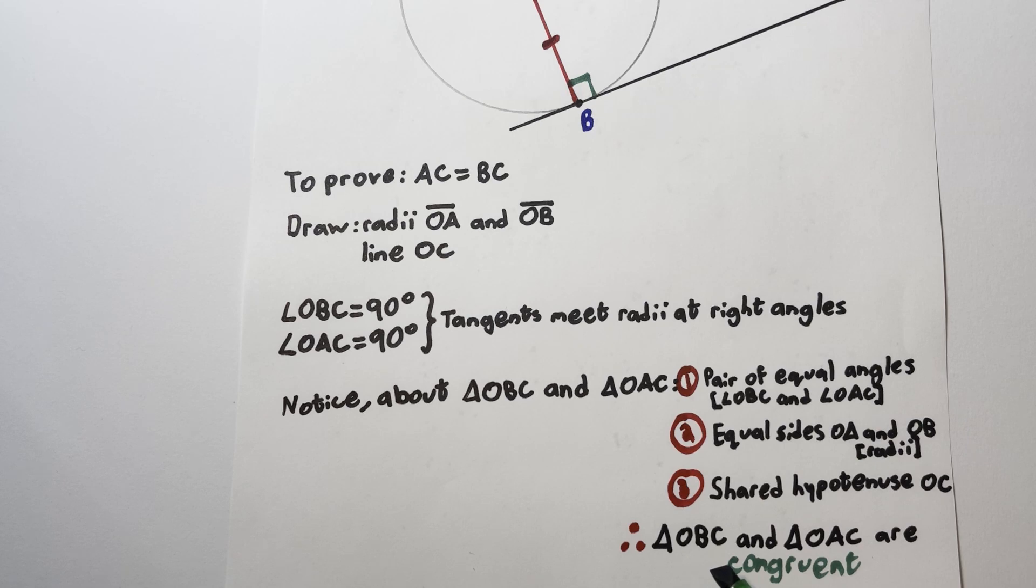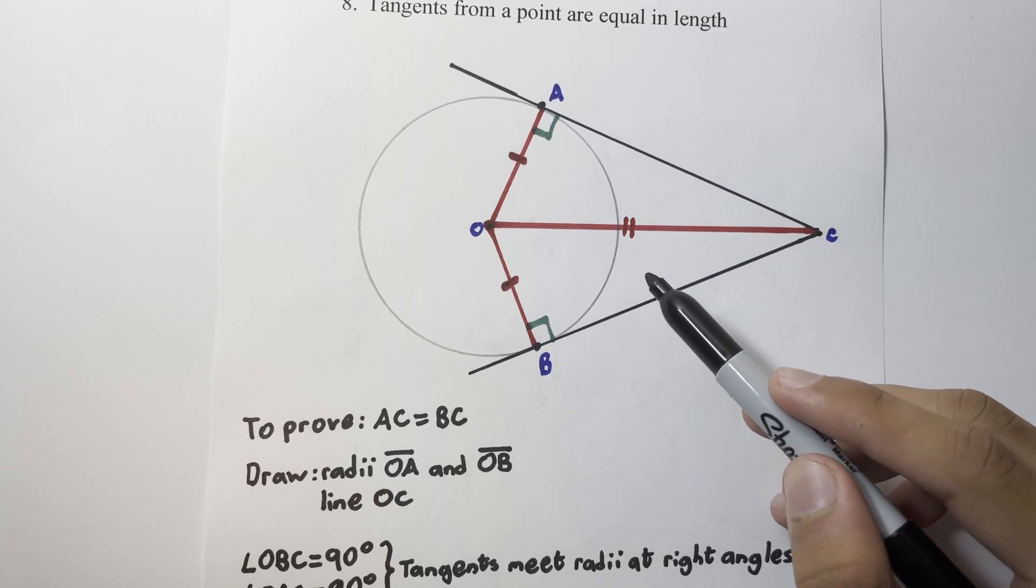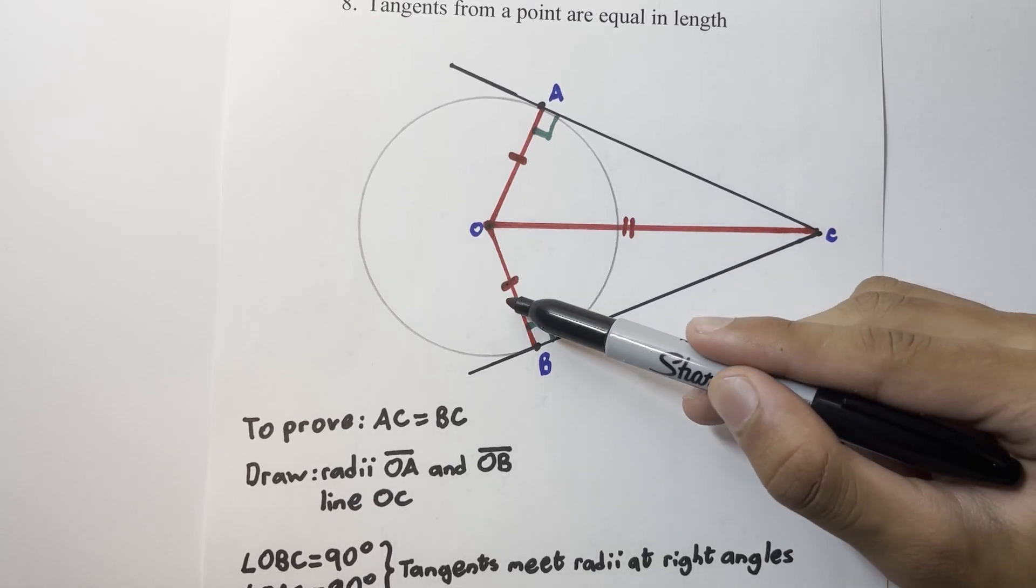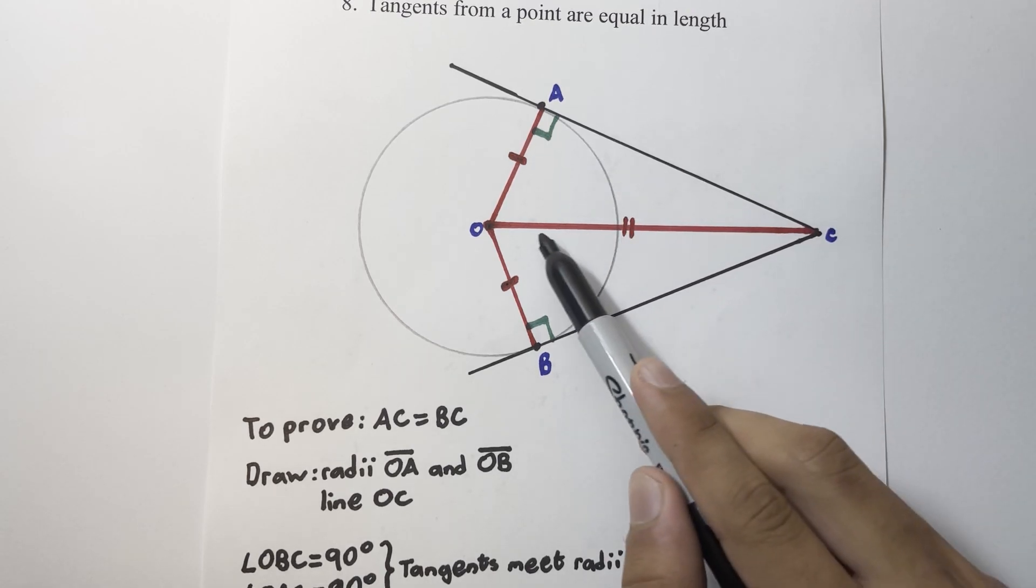This means that they are completely identical. Since we have shown that the two triangles are congruent or identical, this means that this side is identical to this side in these two triangles. The shared hypotenuse is equal, they have a shared angle, and since they are identical, this means that the side BC and the side AC must be exactly the same in length.